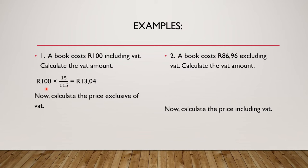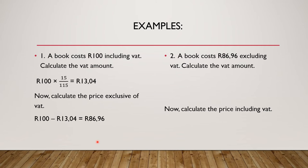So remember this is my 100 rand, my price including VAT. Multiply it by 15 over 115 and this is my VAT amount. It says now calculate the price exclusive of VAT, meaning you're going to use the answer from above in your calculation. So I'm going to take my 100 rand minus the VAT amount and we get 86 rands and 96 cents.